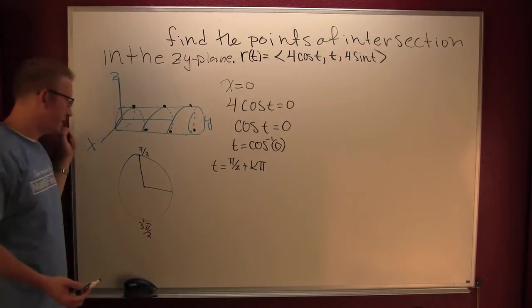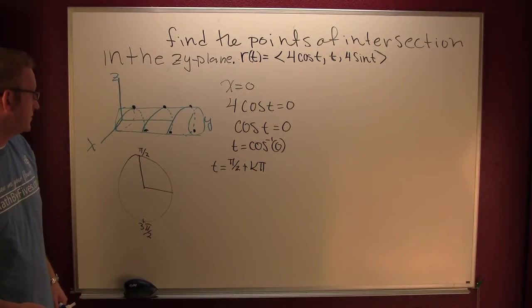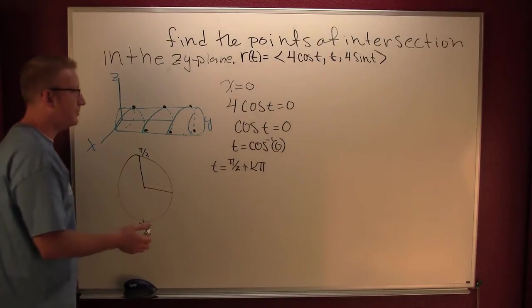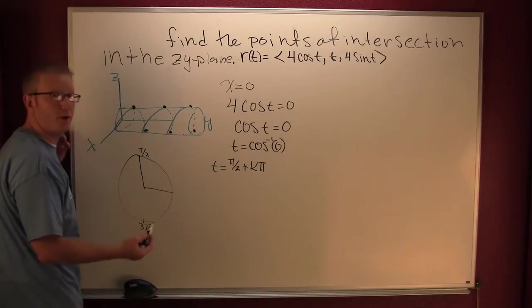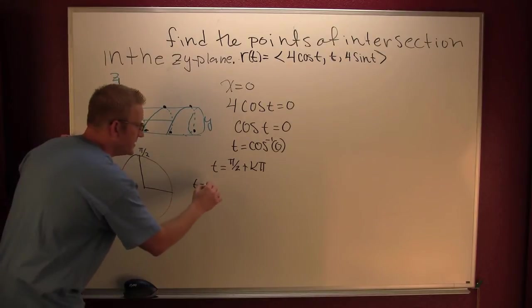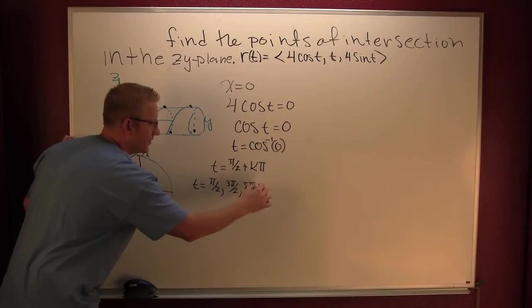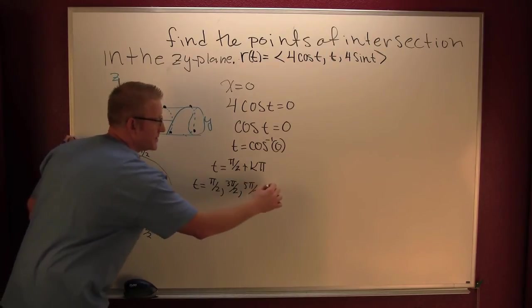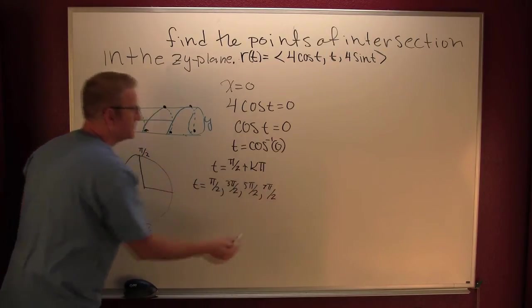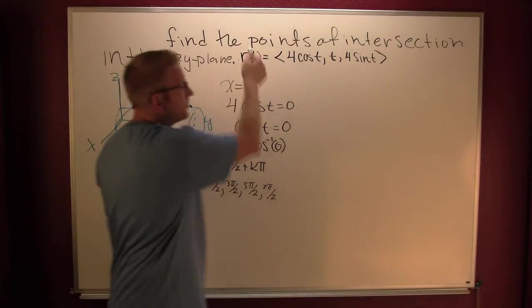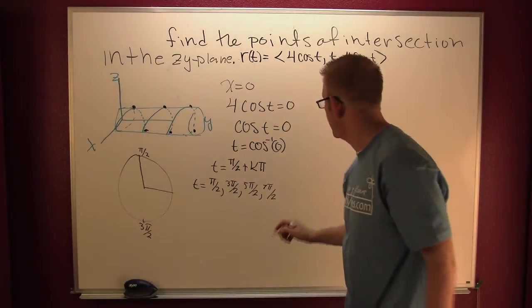Got totally lucky on that one. Awesome. Keep on keeping on. Here's my t values. Why don't we crank out a couple? So t is pi over 2, it's also 3 pi over 2, and 5 pi over 2, and 7 pi over 2. And that's going to give us these points when we plug it into our vector value function.